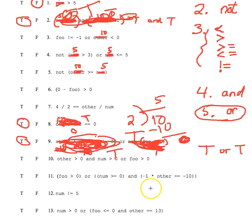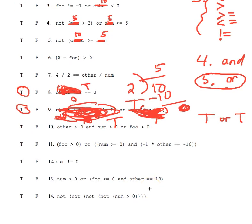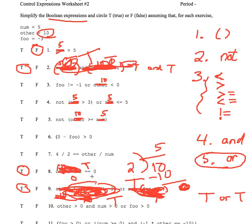The last thing I'll say about this worksheet before you do the rest at home, be careful with number eleven. There's lots of grouping symbols and lots of parentheses. Be careful with number fourteen. Because nots cancel out with each other in pairs. Number fourteen is really the same thing as just saying, is num greater than zero? Because all the nots cancel each other out. Number six, zero minus negative three. You should know how to do that in math. The answer is either going to be three or negative three. We're subtracting a negative. Good luck with the rest of the worksheet.